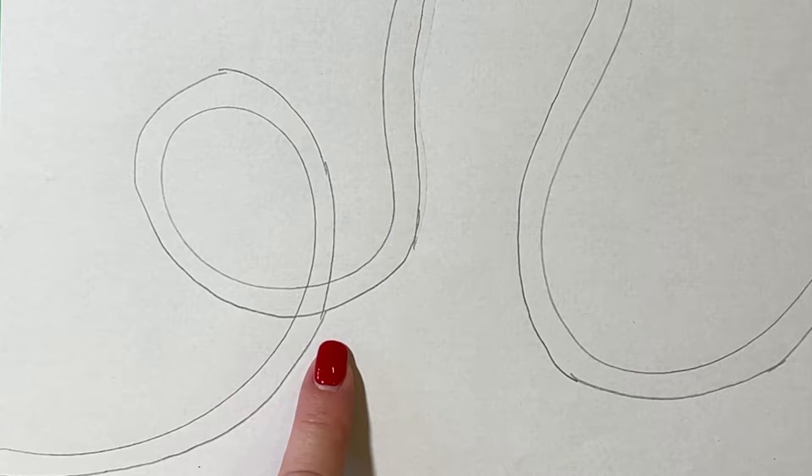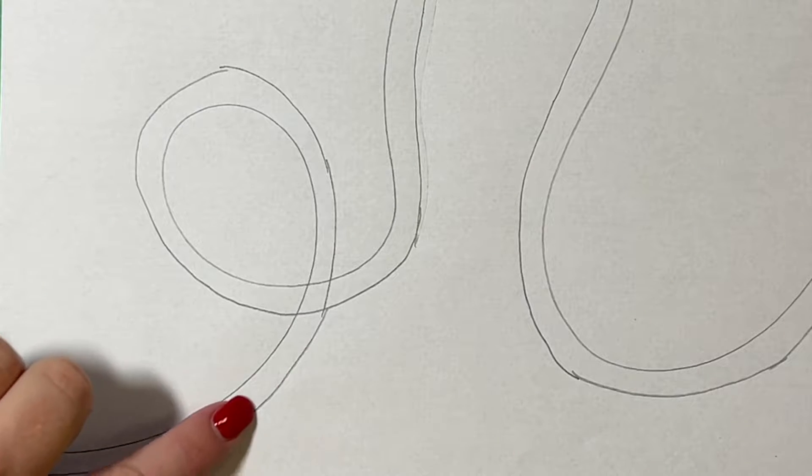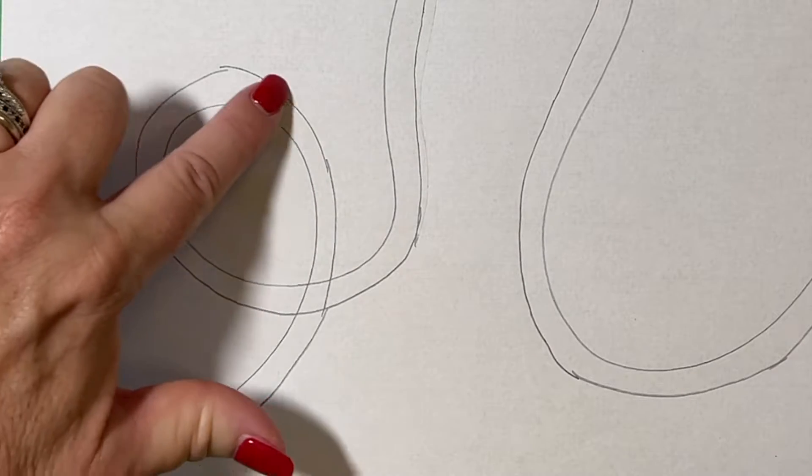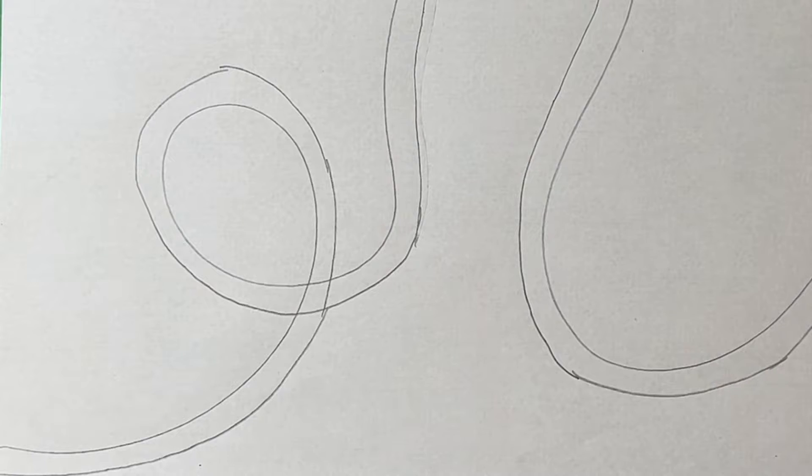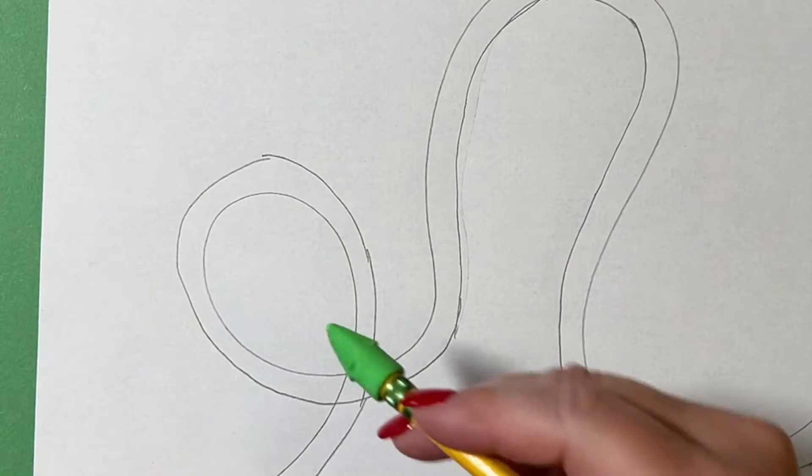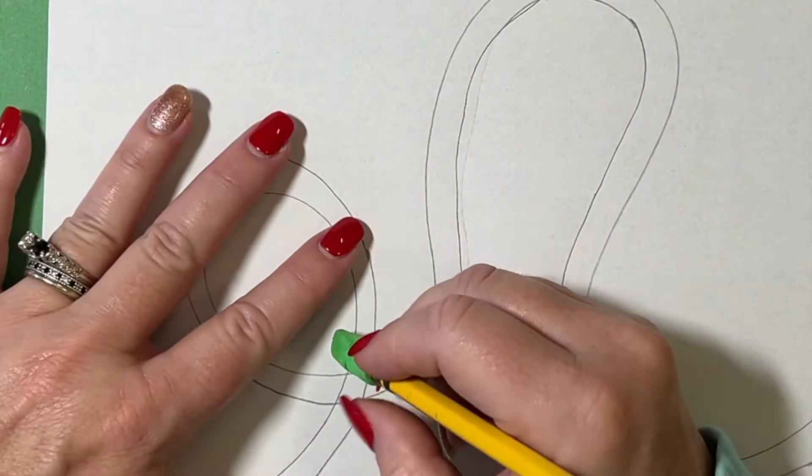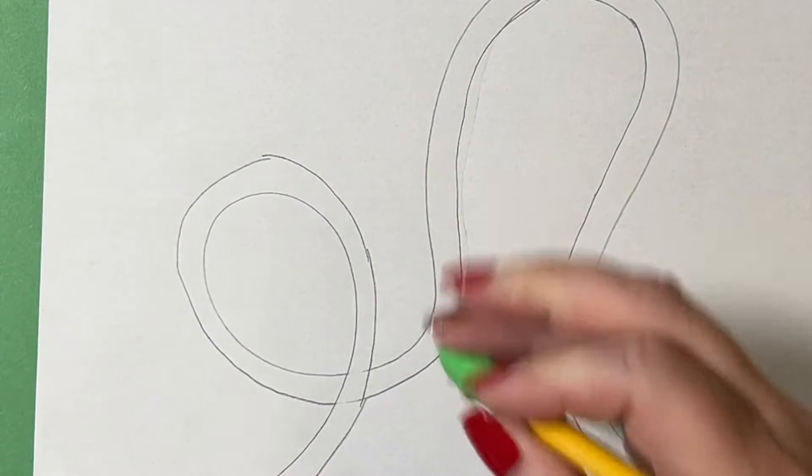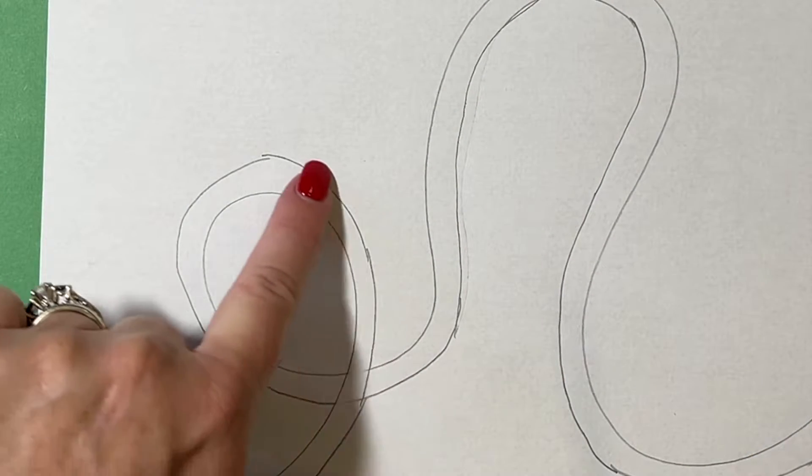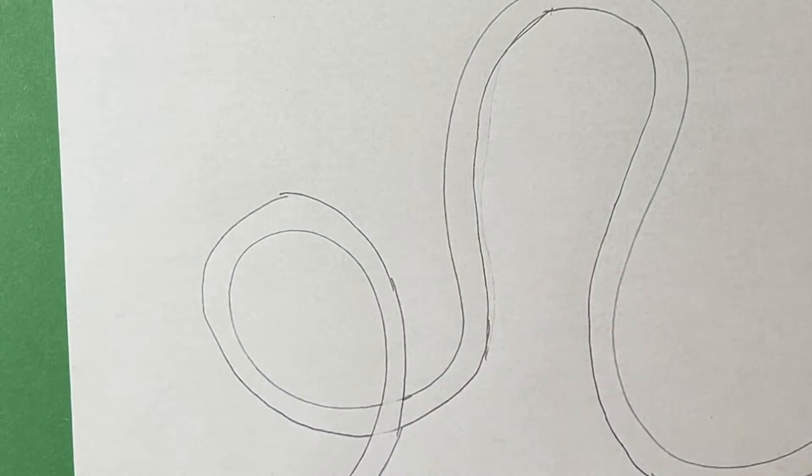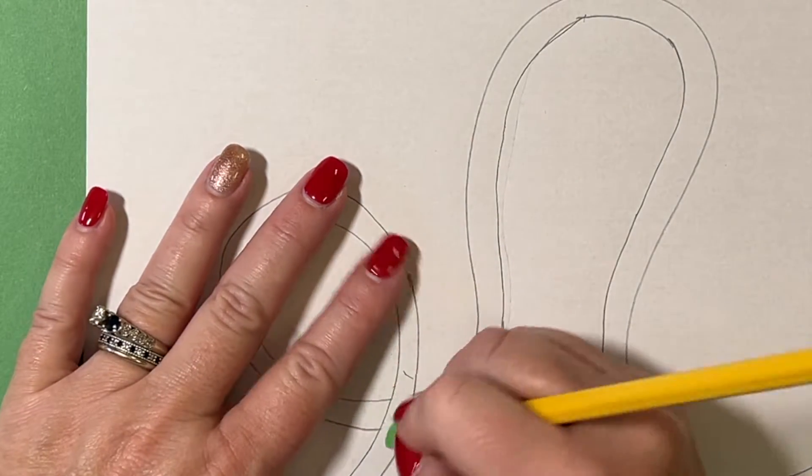You already know from art class because I have taught you overlapping. When two objects overlap, you've got to do some erasing. So you need to decide, is this strand going to be on top of this? Or is this one right here going to be on top of this one? Doesn't matter. It's just a matter of am I erasing this or am I erasing this? I think I'm going to erase right here so that it looks like this strand goes on top, loops around, and then goes behind it right here. So I have fixed my overlapping.